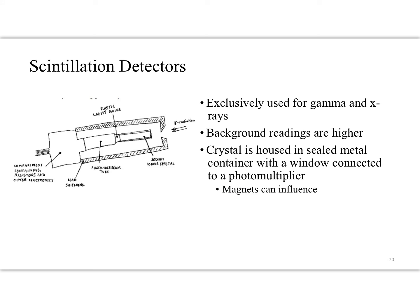Considering different types of detection equipment — one of the first the textbook mentions is the scintillating detector. We use these quite a bit as well counters in nuclear medicine. They're used exclusively for gamma and x-rays. They're very sensitive to background radiation, so you have to calibrate them to the background, and they can be influenced by things like magnets. Basically you have a crystal that glows in the presence of radiation, fed through a photomultiplier and then read out. It has a bunch of lead shielding around it because it's so sensitive.